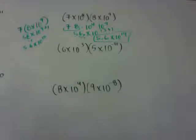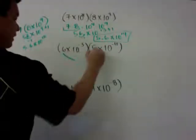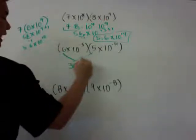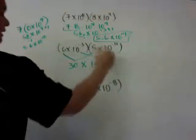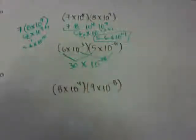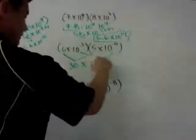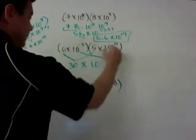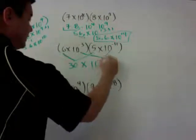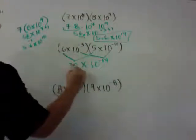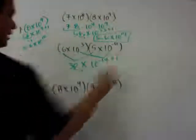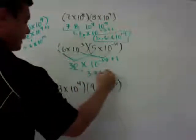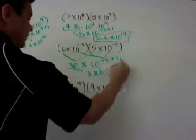Here's another example using a shortcut: 6 times 10 to the negative 8 times 5 times 10 to the negative 6. Go 6 times 5 which is 30, and add the exponents to get 10 to the negative 14th. Move the decimal: minus 1 on the coefficient and plus 1 on the exponent because you're going left. So you get 3 times 10 to the negative 13th power.